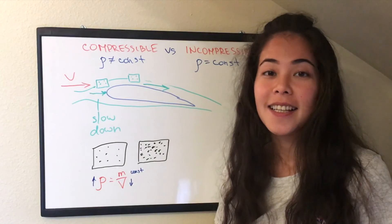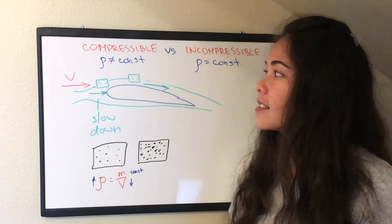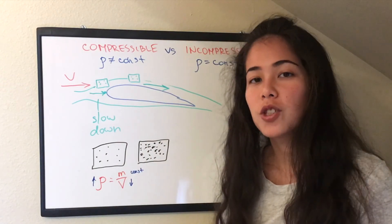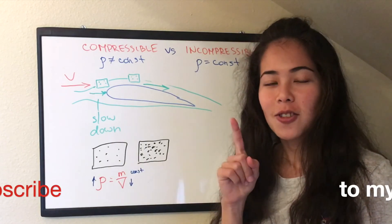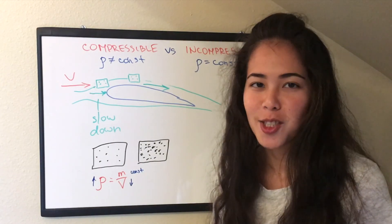So this is it for today. By now we have defined one property of air, which relates to density. And in the next video we will learn about another property, which is viscosity. Don't forget to click the subscribe button to never miss a lesson in aerospace engineering. Bye!